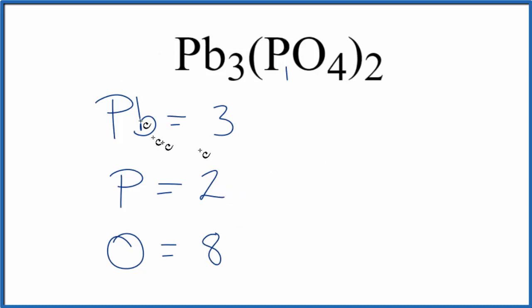If we wanted to know the total number of atoms in Pb3(PO4)2, we'd just add these up. 8 plus 2 is 10, plus 3, 13 total atoms in lead phosphate.